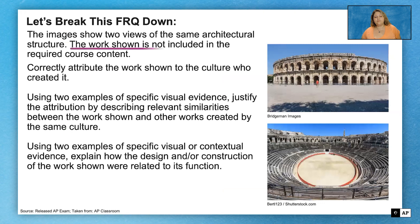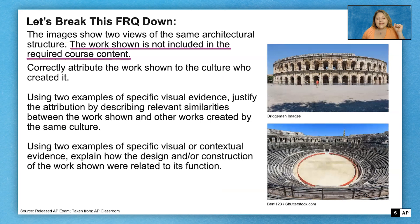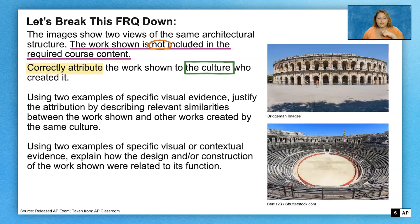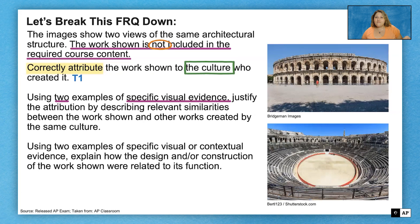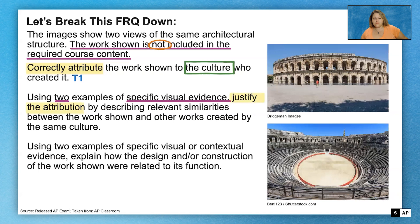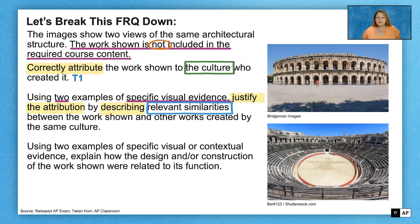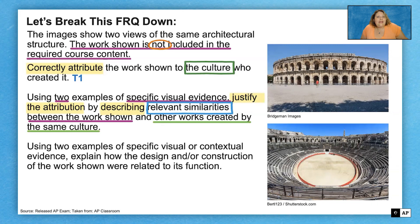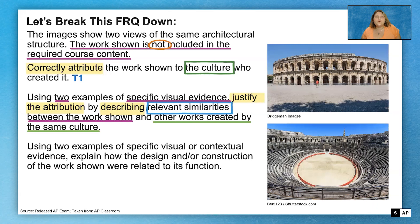Let's break down this FRQ together. The images show two views of the same architectural structure, and the work shown is not included in the required course content. Task one: correctly attribute the work shown to the culture that created it. Tasks two and three: using two examples of specific visual evidence, justify the attribution by describing relevant similarities between the work shown and other works created by the same culture. You're allowed to connect it to any work made by that culture, but chances are you'll be connecting it to the Colosseum.